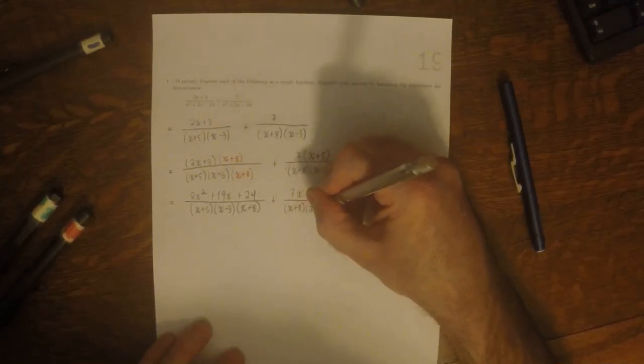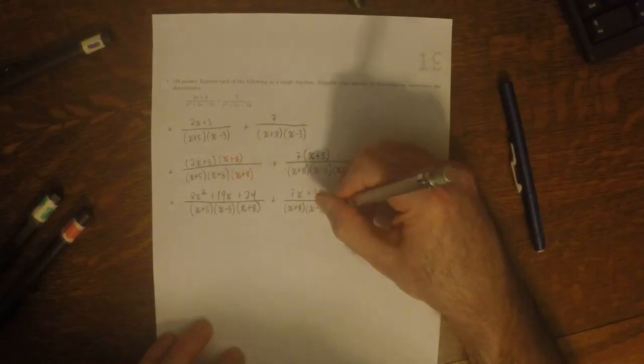And then plus 7x plus 35 over x plus 8 times x minus 3 times x plus 5.